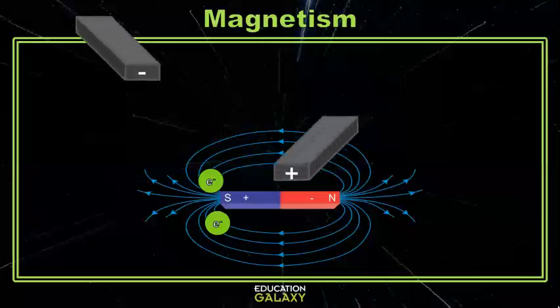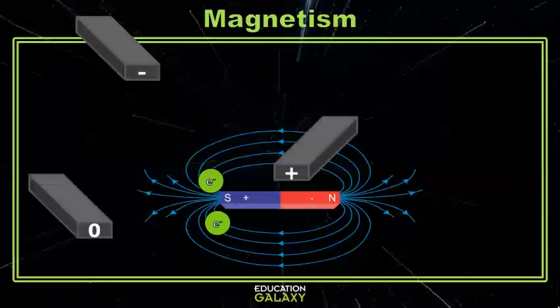If the object is not magnetic, then it won't be attracted or repelled by the magnetic field. Let's save all the other types of force for another day and look at a question together.